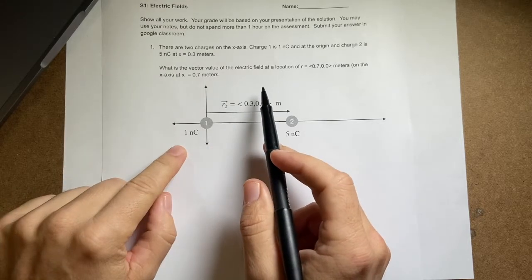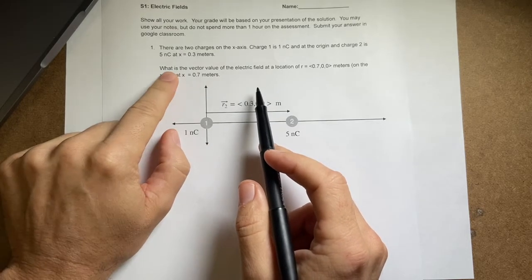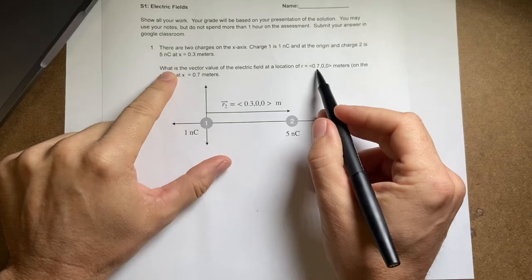Okay, so here I have a 1 nanocoulomb charge and a 5 nanocoulomb charge. And this distance is 0.3 meters, but I put it there as a vector. And the question is, what's the electric field at the location 0.7?